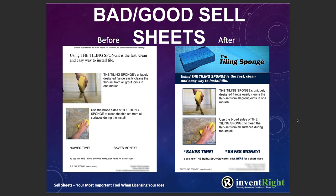This is an example of showing some context — the tiling sponge. 'Using the tiling sponge is the fast, clean, and easy way to install tile.' That's the benefit statement. This is not a fancy sell sheet — it's a really simple sell sheet — but you get it. And then you could do a little virtual prototyping, very little detail on these ridges.